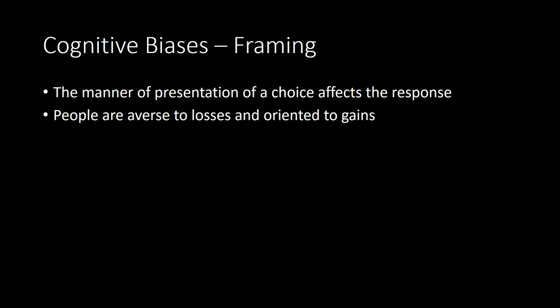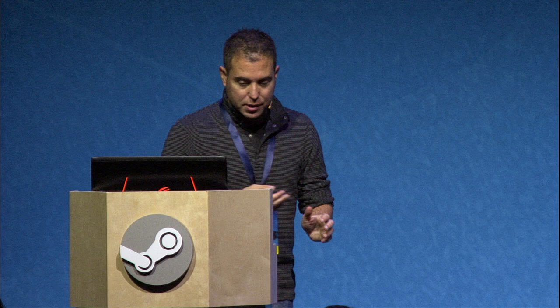Anchoring was one cognitive bias. Here's another: framing. Simply speaking, the manner of presentation of a choice affects the response. I can ask the same question in two different ways and you're likely to respond differently. One common finding is that you can frame the same question as avoiding a loss or acquiring a gain, and people tend to be averse to losses and oriented towards gains.